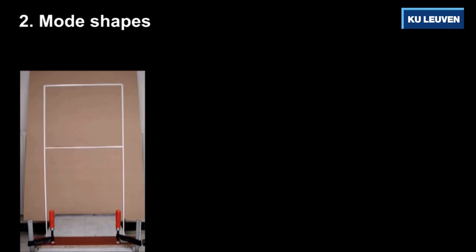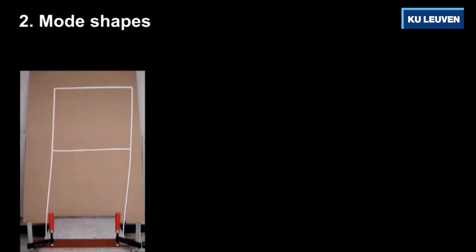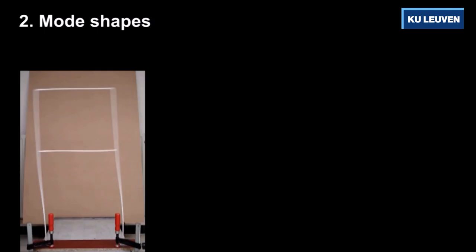The second dynamic characteristic in our toolbox is the mode shape. This characteristic will tell us how the structure is vibrating when excited at one of its natural frequencies, a phenomenon we call resonance. Here you see a small scale structure, a portal frame. Let's have a look at what happens if this structure is excited by a force with a certain frequency. Look carefully to see that this force is applied at the bottom of the right column. The frequency of this force, or thus the rhythm at which it pushes the structure, is increased until it reaches the first natural frequency and thus until resonance occurs.